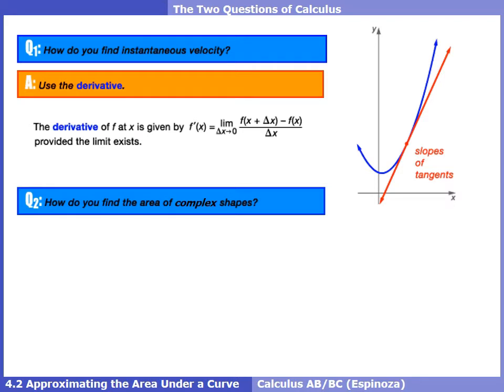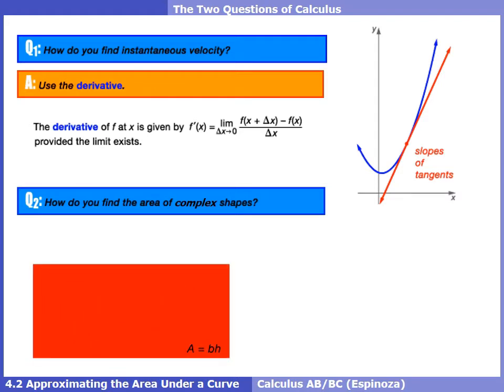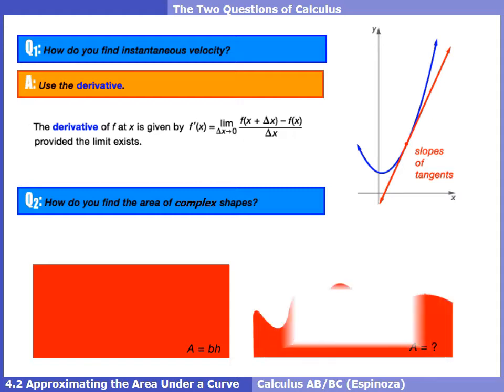The second question of calculus was: how do you find the area of complex shapes? We're not talking about a rectangle where the formula is just base times height — we're talking about weird shapes that have no formulas. While we're not ready to find the exact area under these shapes, maybe we can approximate them, as the title of this section implies.